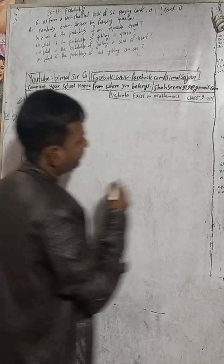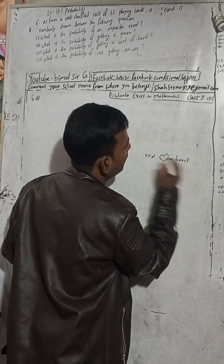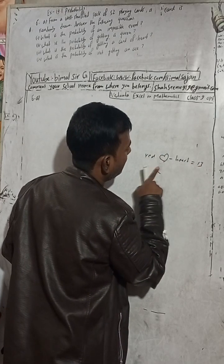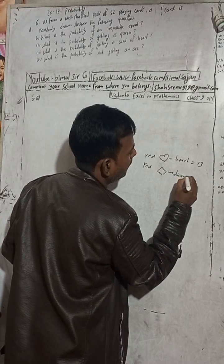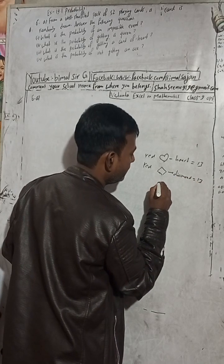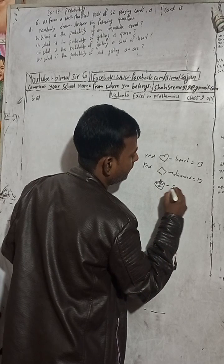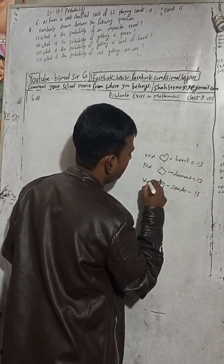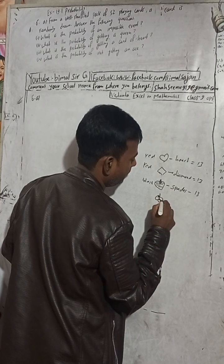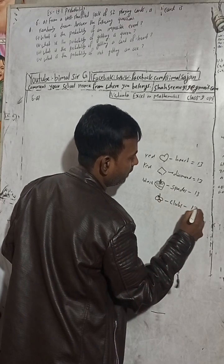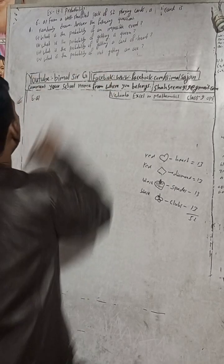In the 52 cards, this shape is called heart — red color. There are 13 heart cards. After that, the other red suit is diamond, which is also red — 13 diamond cards. After diamond, there is spade, which is a black card — 13 spades. And finally, clubs — also black — 13 clubs. So total: 13 + 13 + 13 + 13 = 52 cards.